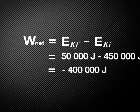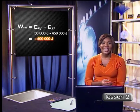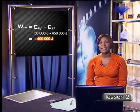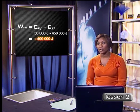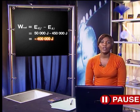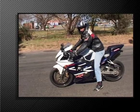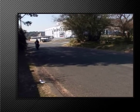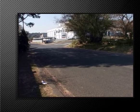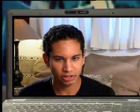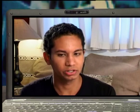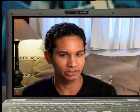Note that the change in kinetic energy is minus 400,000 joules. The net work done on the car is negative — this tells us the kinetic energy of the car decreases when the car brakes. When positive net work is done on an object, it means that the object's kinetic energy increases. So if your calculation shows negative net work, the kinetic energy decreased; if it shows positive net work, the kinetic energy increased.